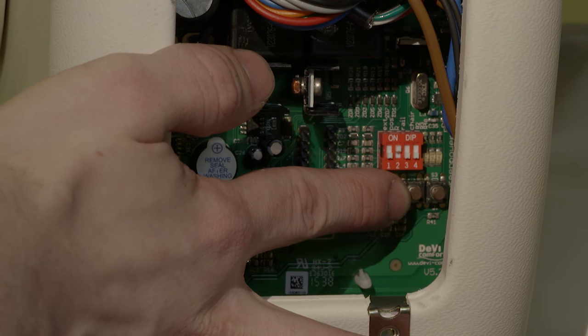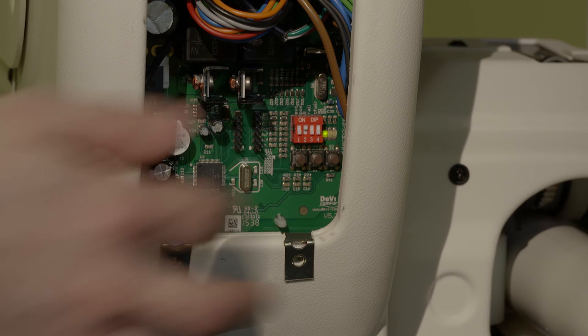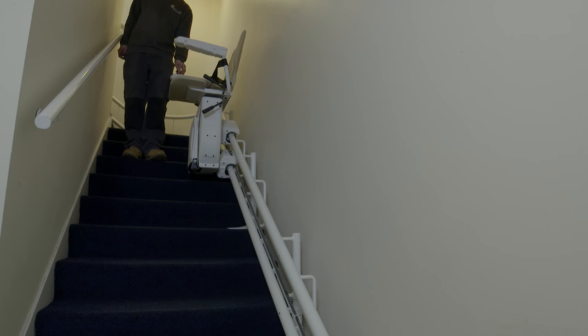Before switching on the stairlift, press and hold microswitch 1 and then turn on the unit. Continue holding until the board stops flashing.